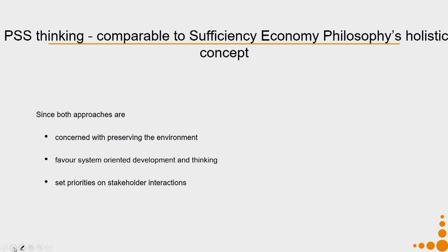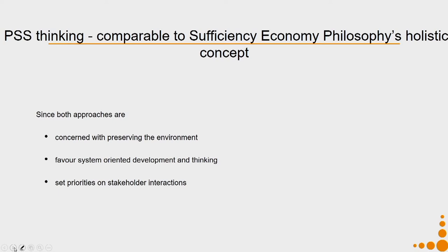Now let us compare PSS thinking with the sufficiency economy philosophy. Sufficiency economy philosophy is a holistic concept, working at various levels and integrating all levels of economy and society. Both approaches are concerned with preserving the environment and favour system-oriented development and thinking. They are also based on setting priorities on stakeholder interactions — all that we discussed in sufficiency economy is not possible without good stakeholder interaction, which starts from the household level and reaches up to the national level. Sustainability can be achieved through well-designed stakeholder interactions.